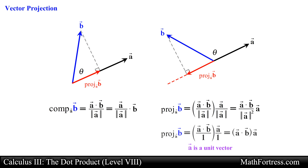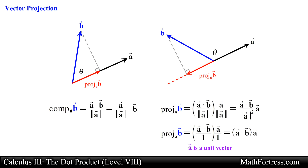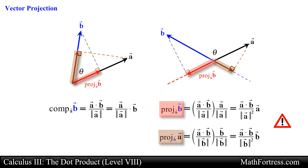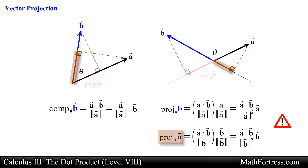In the special case where vector a is a unit vector, this expression simplifies. Both forms are equivalent, though the first is more intuitive. One last thing to note: we need to be very careful with notation. The vector projection of vector b onto vector a will generate a totally different vector compared to the vector projection of vector a onto vector b, assuming a and b are distinct vectors. In the first expression the vector generated is parallel to vector a, while in the second it is parallel to vector b.